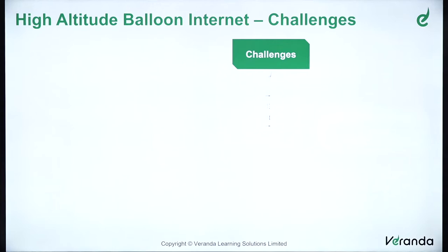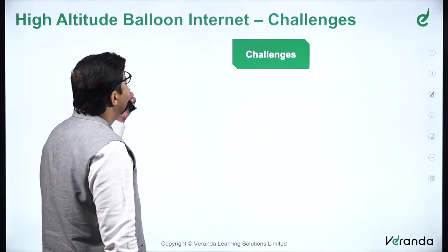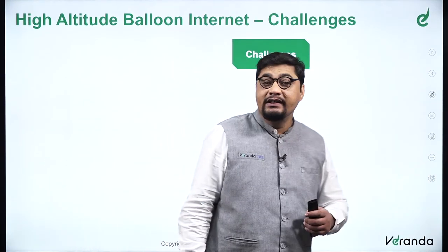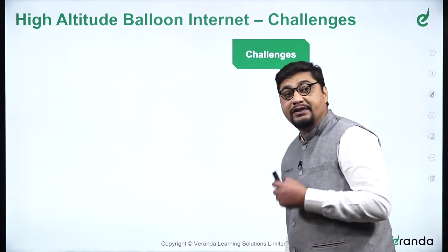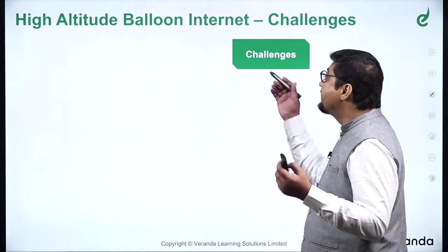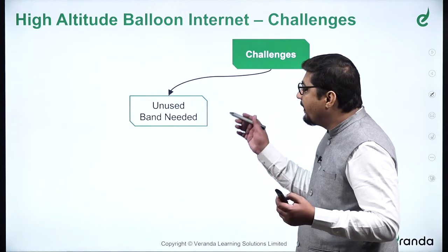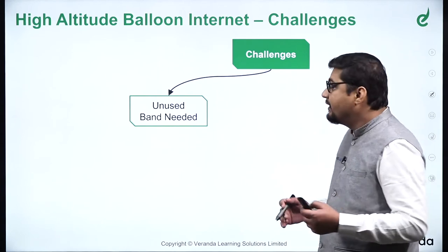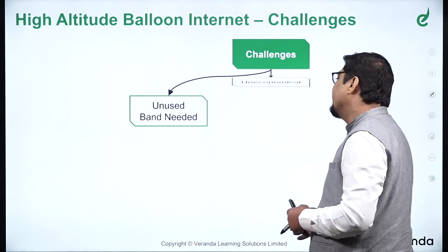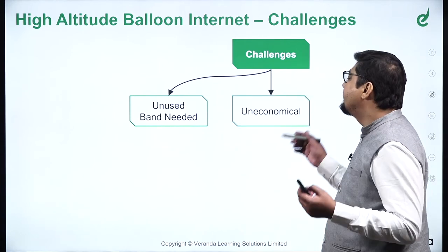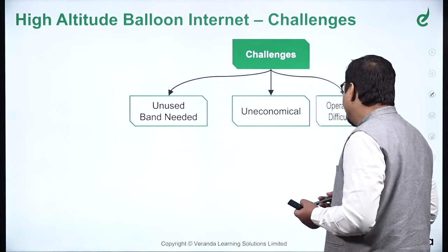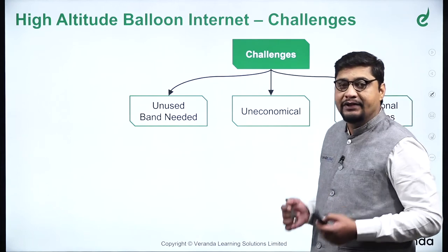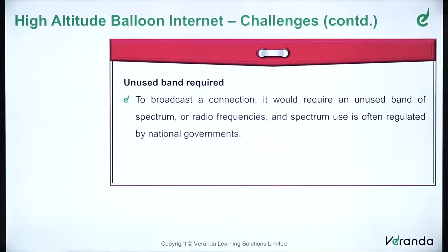Now let's move on to the challenges of high altitude balloon internet. There are three major challenges: first, an unused band of spectrum is needed; second, it is uneconomical; and third, there are operational difficulties. We will see each of them as we proceed.